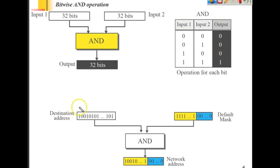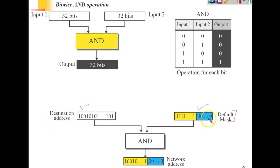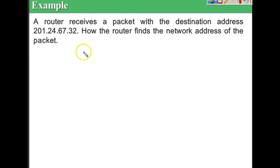So the router takes the destination address from the arriving packet and applies the default mask. It is very easy to find the default mask because by looking at any address we can easily identify its class and therefore its default mask. Once the mask is found, we do the AND operation, and whatever we get is the network address.